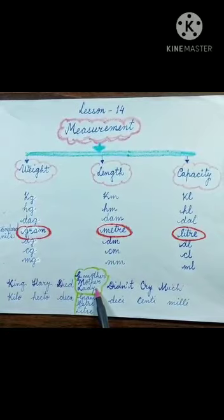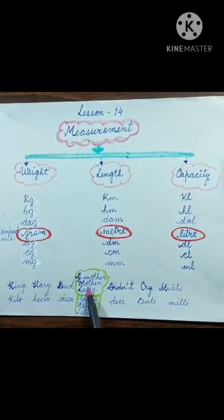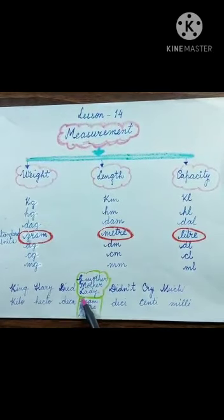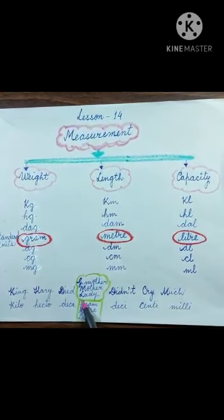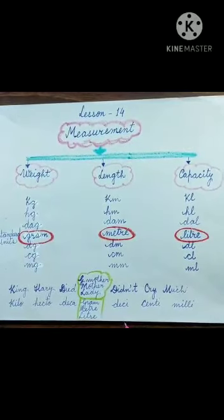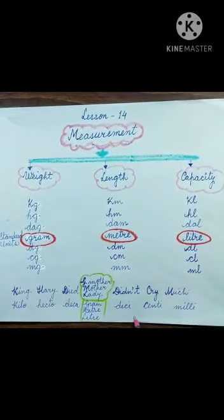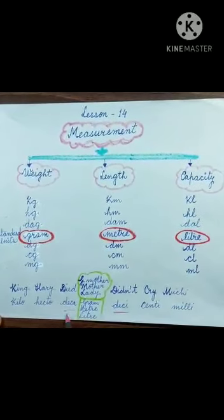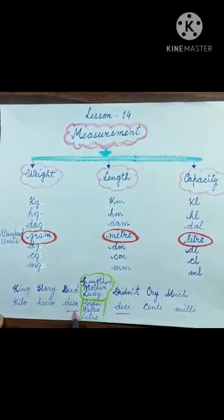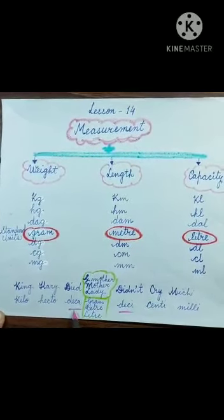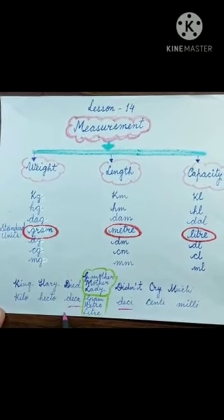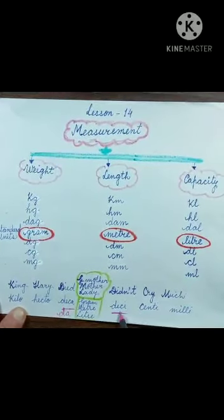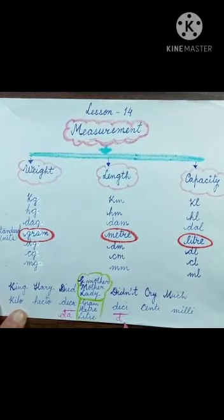When talking about weight, use grandmother (G for gram). For length, use mother (M for meter). For capacity, use lady (L for liter). One important thing to keep in mind: D for deca and D for desi — deka is the bigger unit than deci. In a question, deka will be written as 'da' and deci will be written as 'd'.